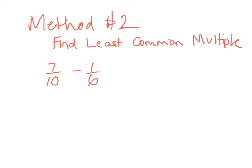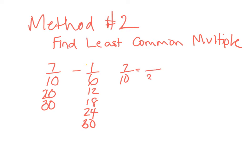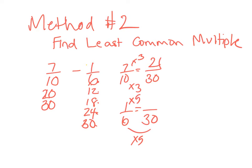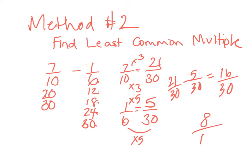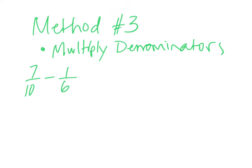Method two: find the least common multiple. We list multiples of ten — ten, twenty, thirty — and stop because six goes into thirty. Multiples of six: six, twelve, eighteen, twenty-four, thirty. So seven tenths equals how many thirtieths? Multiply by three — twenty-one thirtieths. One sixth equals how many thirtieths? Multiply by five — five thirtieths. Twenty-one thirtieths minus five thirtieths equals sixteen thirtieths, which reduces to eight fifteenths — the same answer.